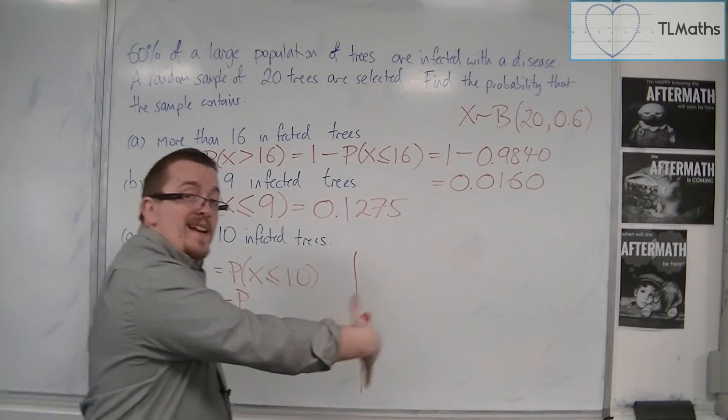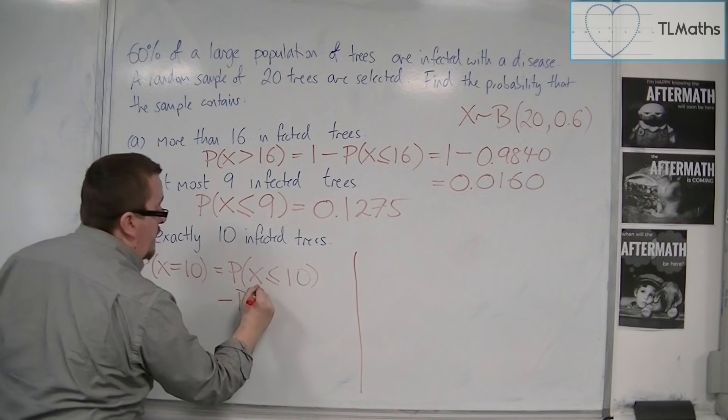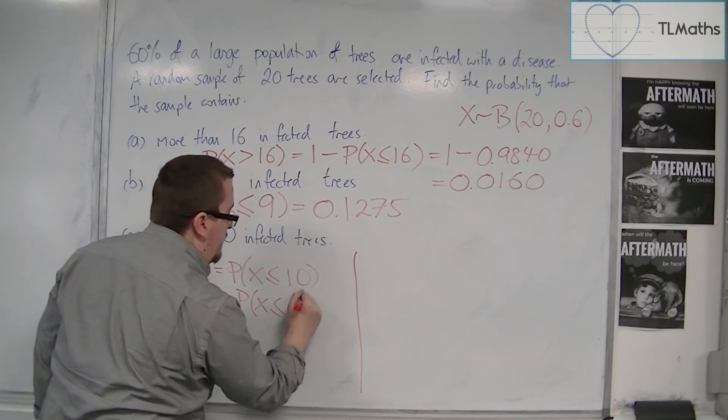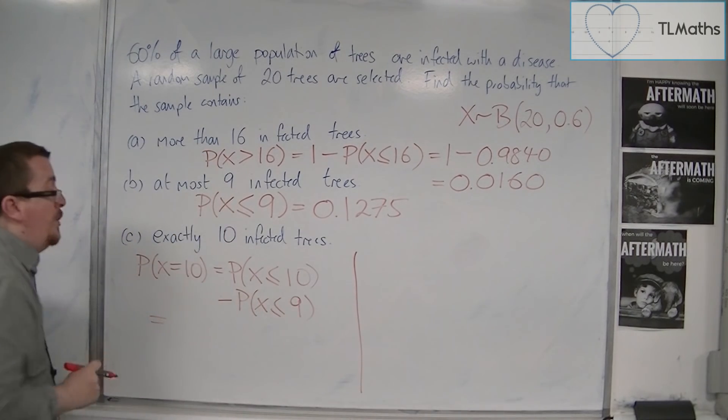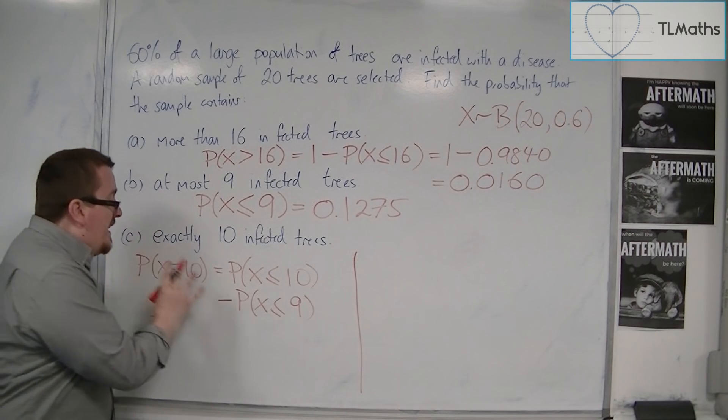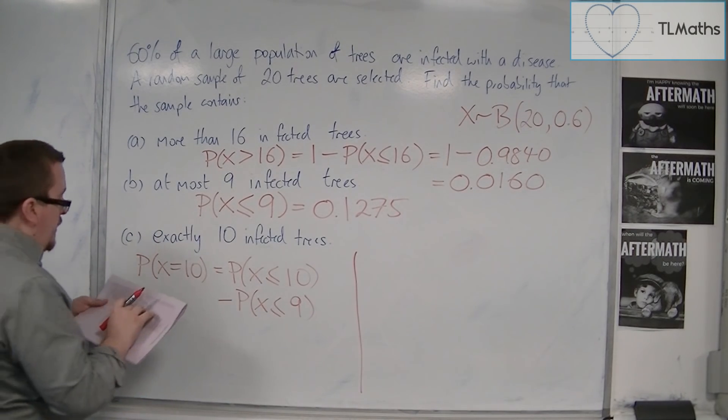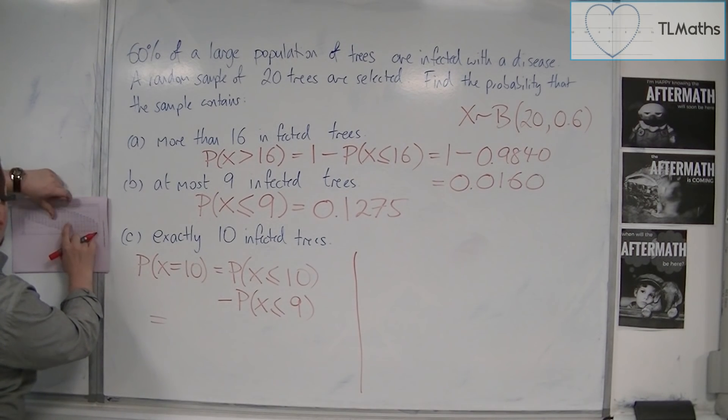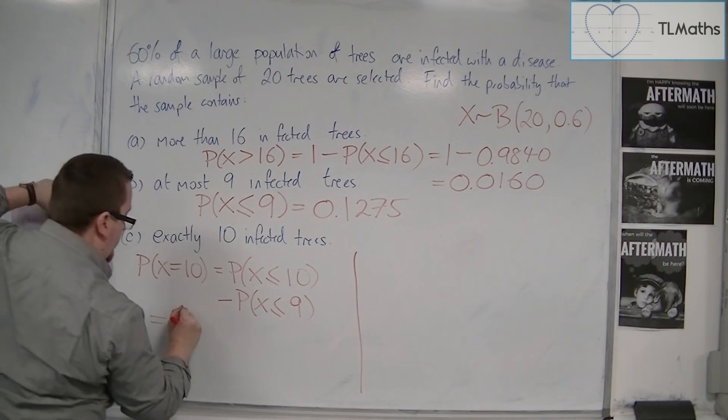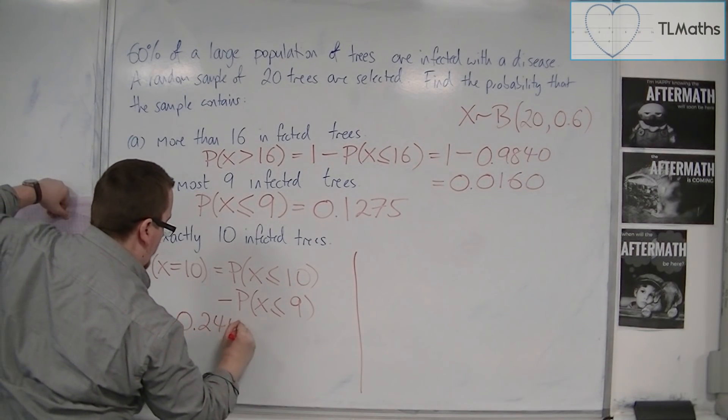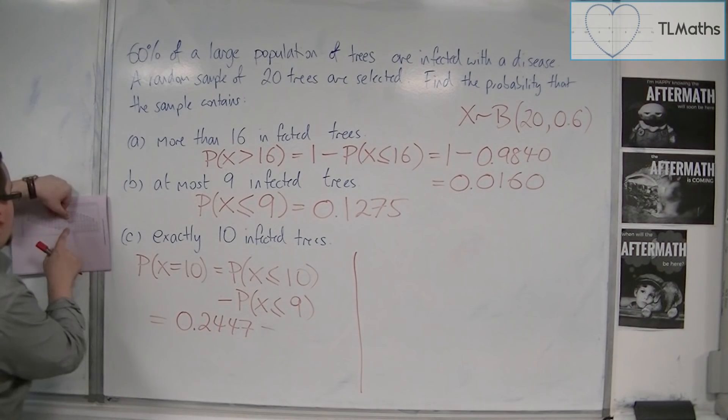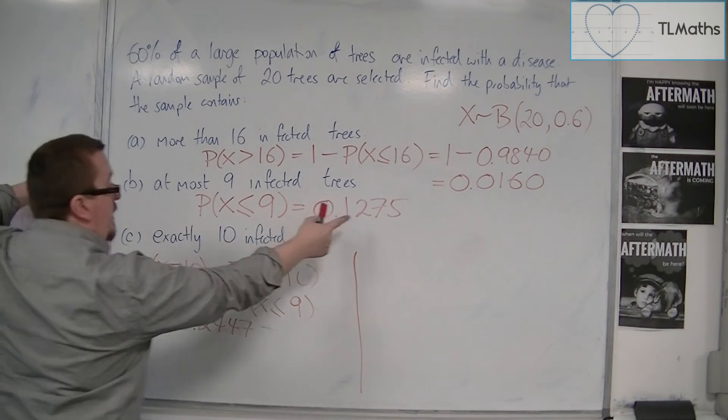So I take away 0, 1, 2, 3, 4, 5, 6, 7, 8, 9. So probability of X being less than or equal to 9. You can work out exact probabilities from the tables. So 0.6, and we're going to 10, so that's 0.2447. And I want to take away 9, which was 0.1275, the answer that I got there.